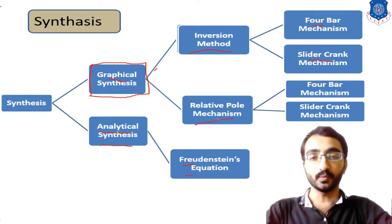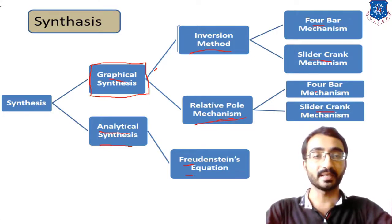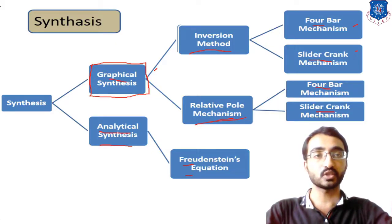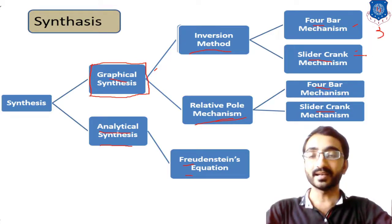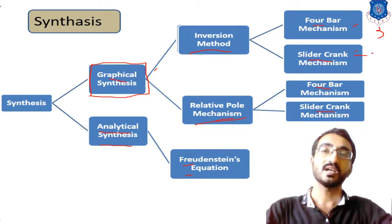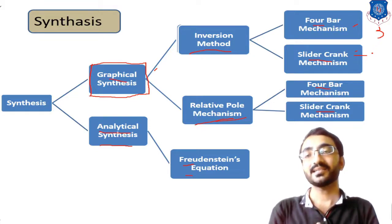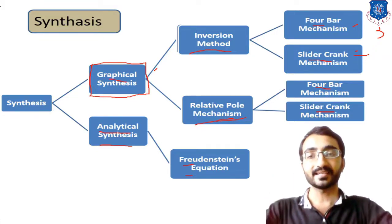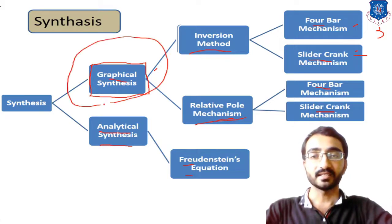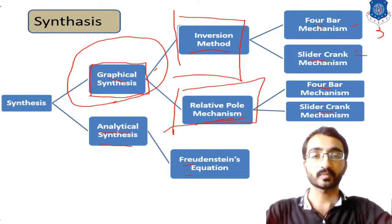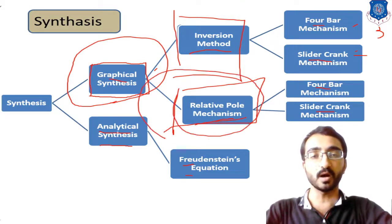Similarly, the relative pole method applies to both four-bar and slider-crank mechanisms. These methods are further divided into two position synthesis and three position synthesis. Overall, synthesis is mainly classified into graphical and analytical, and within graphical there are two categories: inversion method and relative pole method. In this session we will focus on the relative pole method.